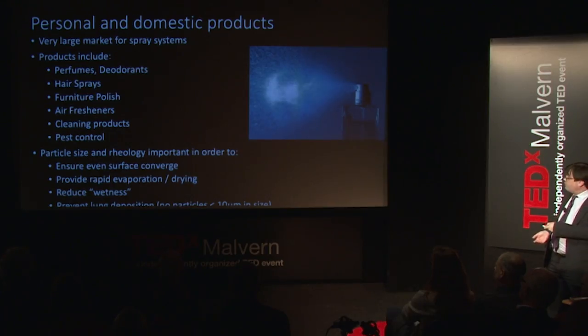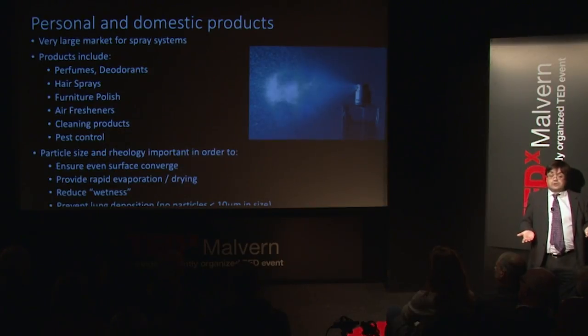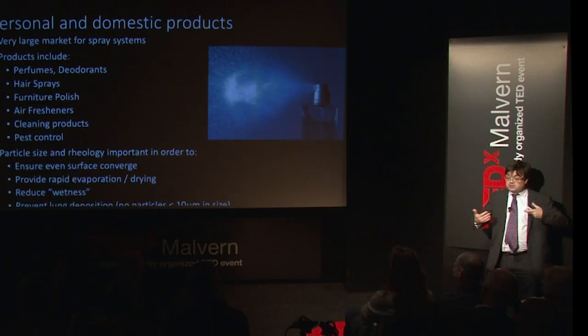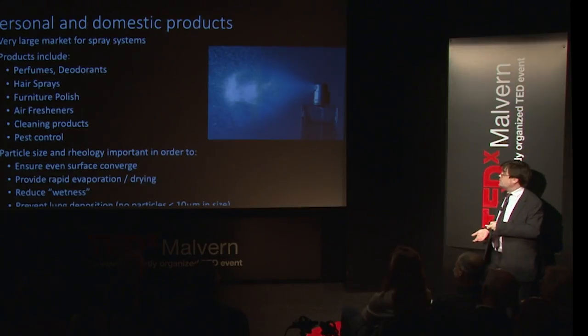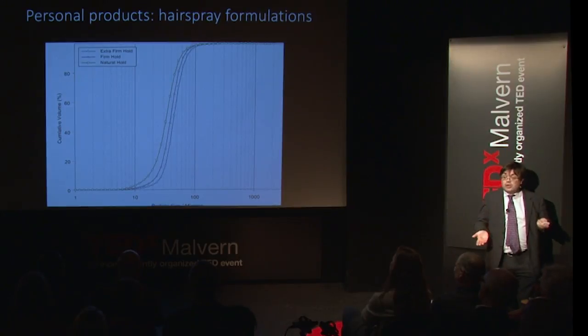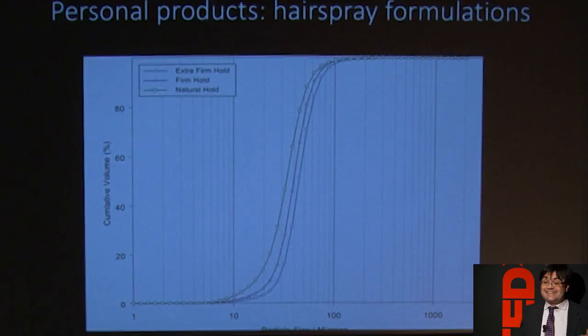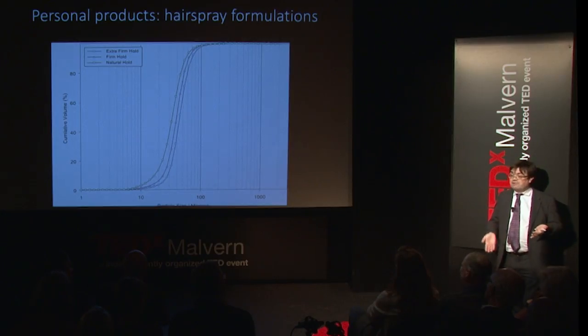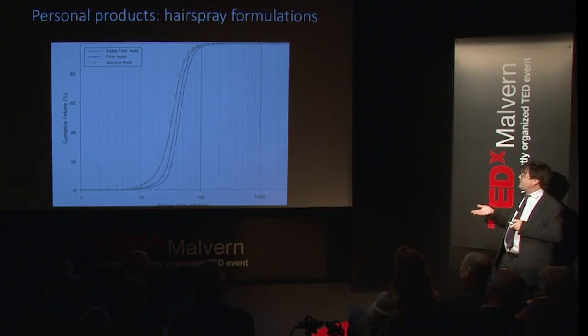We want to avoid droplets being too small so they end up in the lungs, unless it's an asthma inhaler where that's the whole point. With hairspray, the hold is size related — the firm hold and natural hold are actually the same formulation. The extra firm hold just has a higher content of particles, producing a bigger droplet size with more grip on the hair. It's exactly the same formulation, just more particles in the strong version.